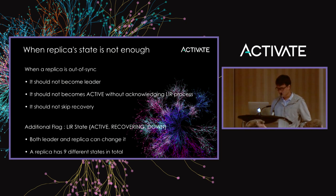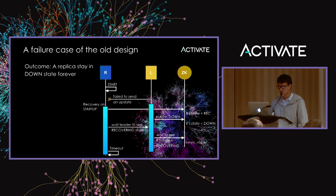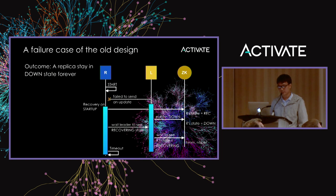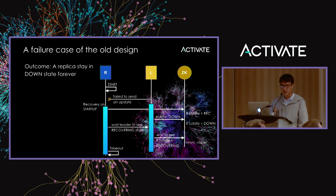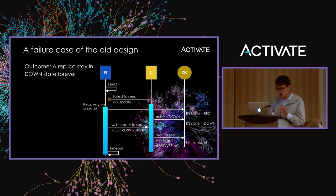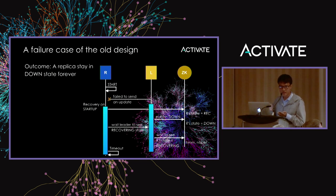Even so, there are still several long-standing issues found in the old design. One outcome is a replica staying in the Down state forever. The reason is that both the replica and the leader are trying to update the state of a replica simultaneously. Here is the scenario: when a replica starts up, the leader may want to forward an update to it, and let's assume that update fails. So the leader starts the LIR thread.